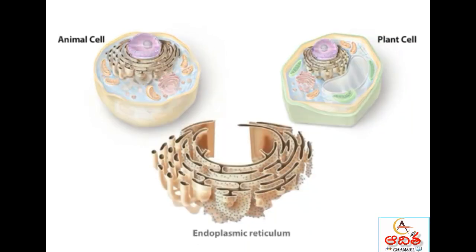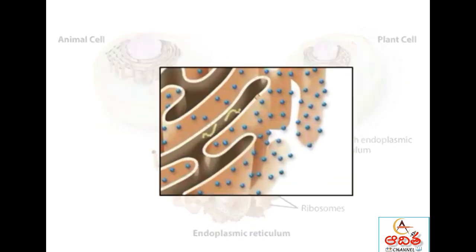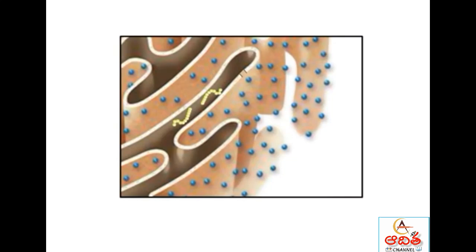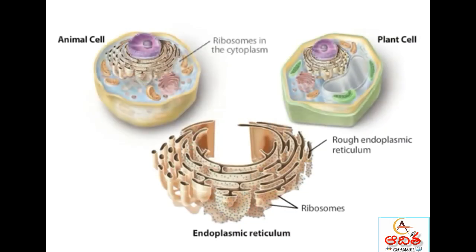The endoplasmic reticulum, or ER, is a vast network of membranes that serves as a kind of assembly line for the manufacture of proteins and lipids. The rough ER has a rough appearance because it is studded with ribosomes. Ribosomes are protein-making machines, and they pass newly made proteins into the interior of the ER. Eukaryotic cells also have ribosomes in the cytoplasm.